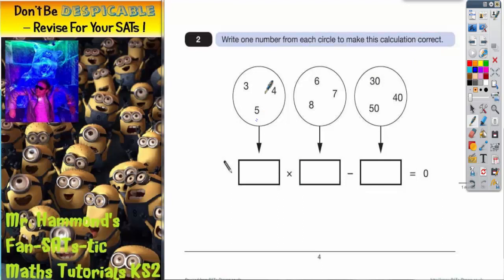So, we've got to pick two numbers from these two circles and times them together. And then we've got to subtract a number from this circle and the overall answer needs to be zero.